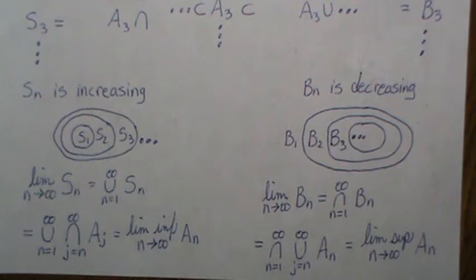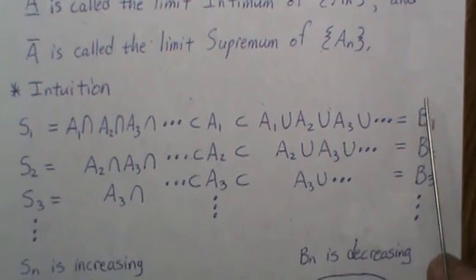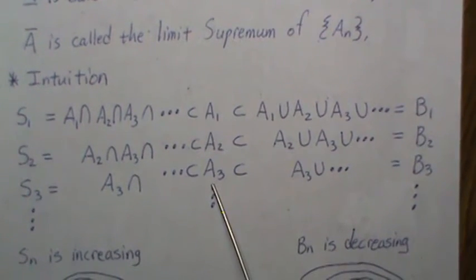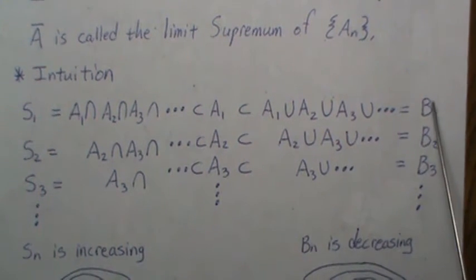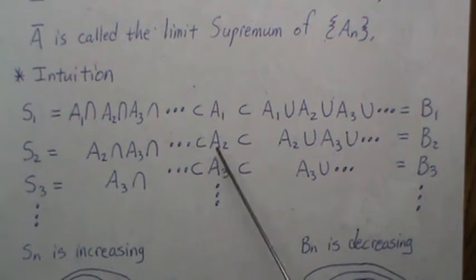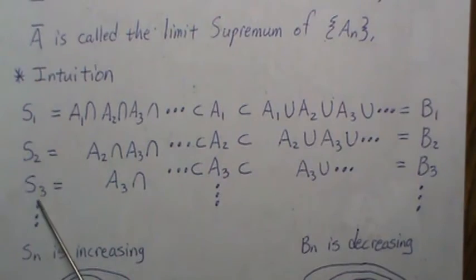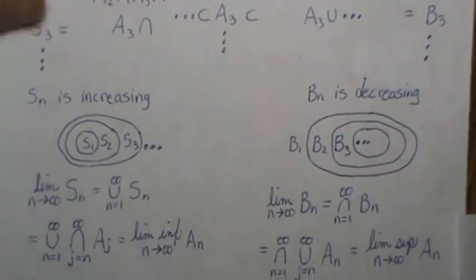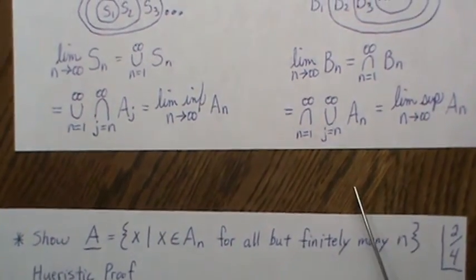Intuitively, B_n is the smallest set that is larger than A_n and decreases down to A_n, while S_n is the largest set that is smaller than A_n and increases up to A_n.